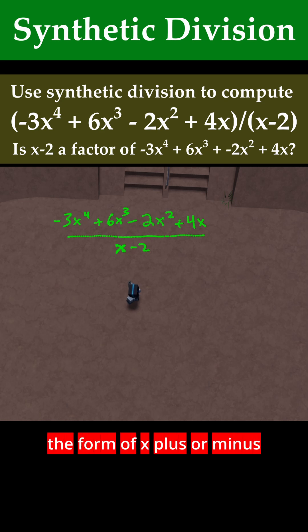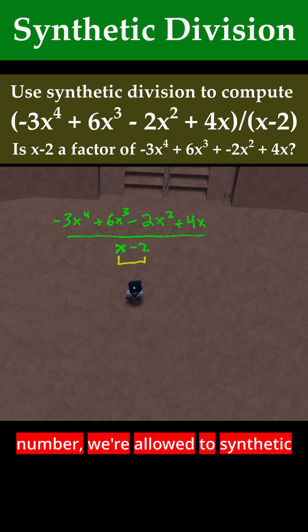The first thing to point out is that because we have something in the form of x plus or minus a number, we're allowed to do synthetic division on this.